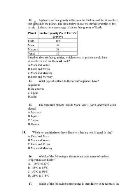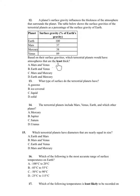Number 12. A planet's surface gravity influences the thickness of the atmosphere that surrounds the planet. The table shows: Earth 100%, Mars 37%, Mercury 38%, Venus 89%. Based on their surface gravities, which terrestrial planets would have atmospheres that are the least thick? A. Mars and Venus. B. Earth and Venus. C. Mars and Mercury. D. Earth and Mercury.